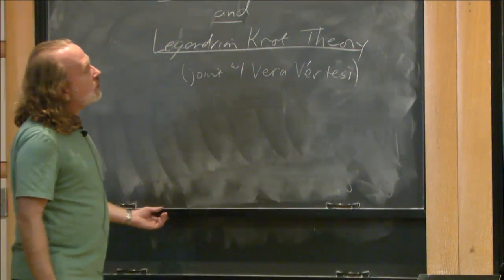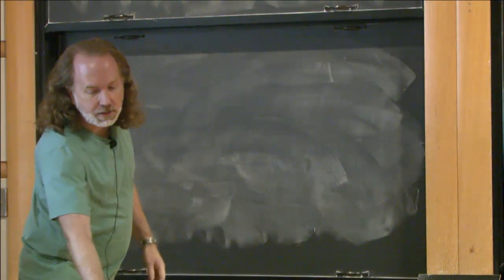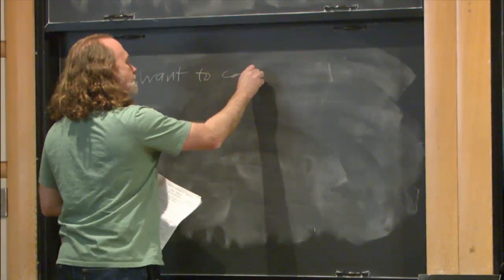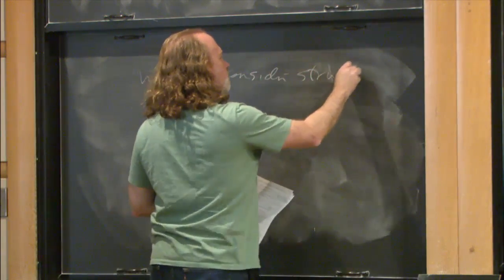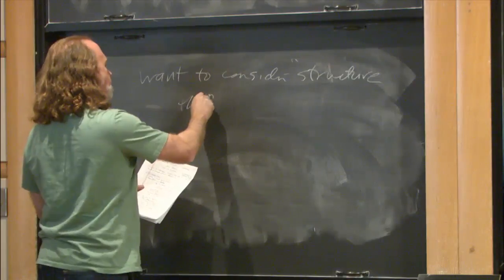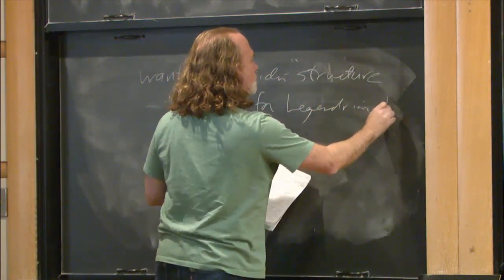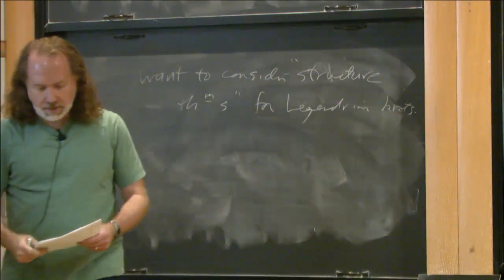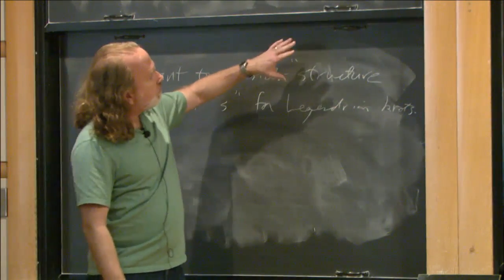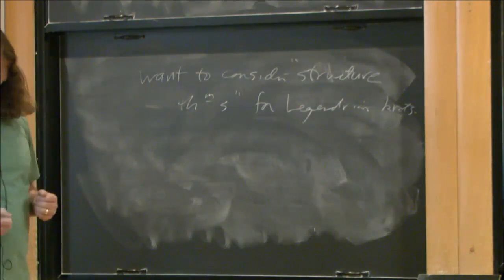Today I want to talk about, in general, what I like to call structure theorems for Legendrian knots. What I mean by this is we'd like to understand the structure, or say the classification of those knots under some well-understood topological operation, like maybe connected sums, satellites, or whatever that might be.